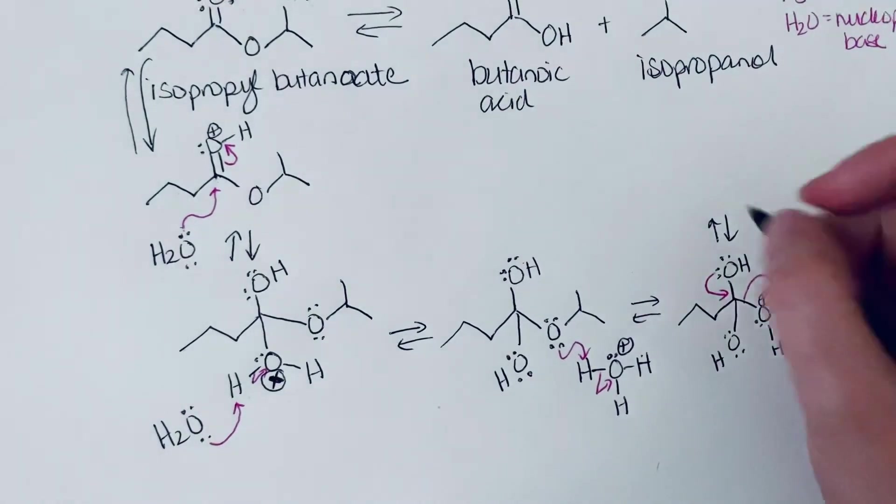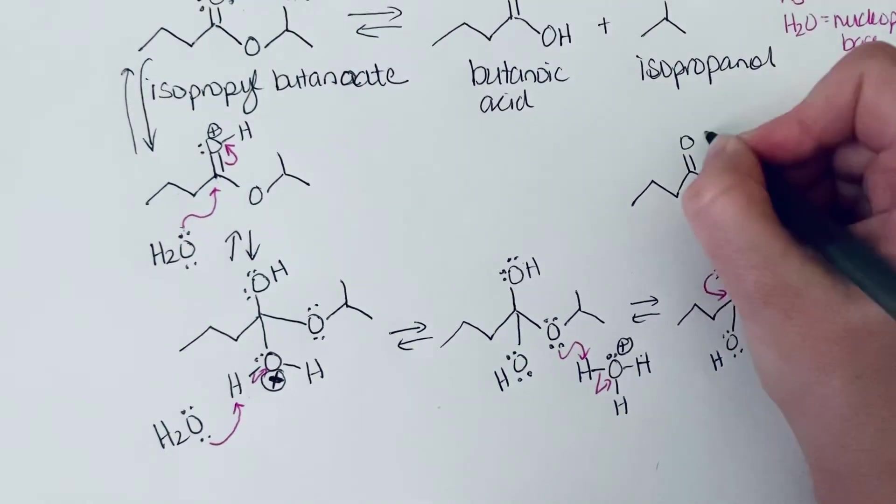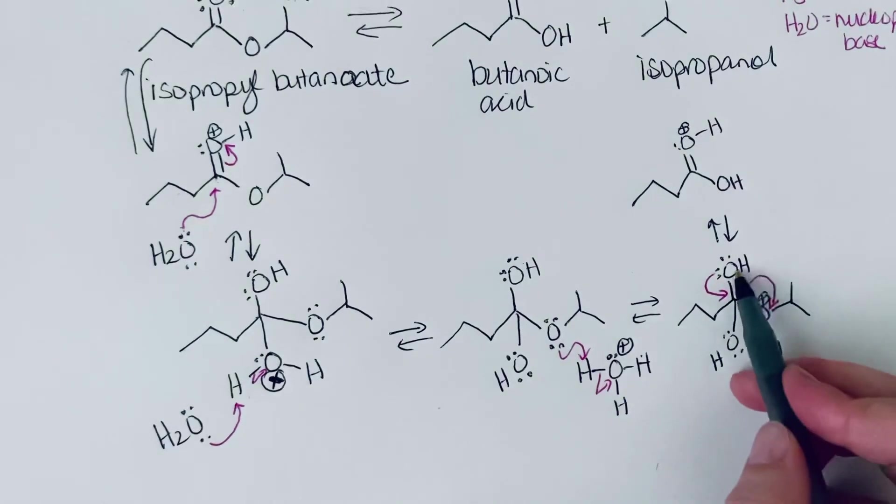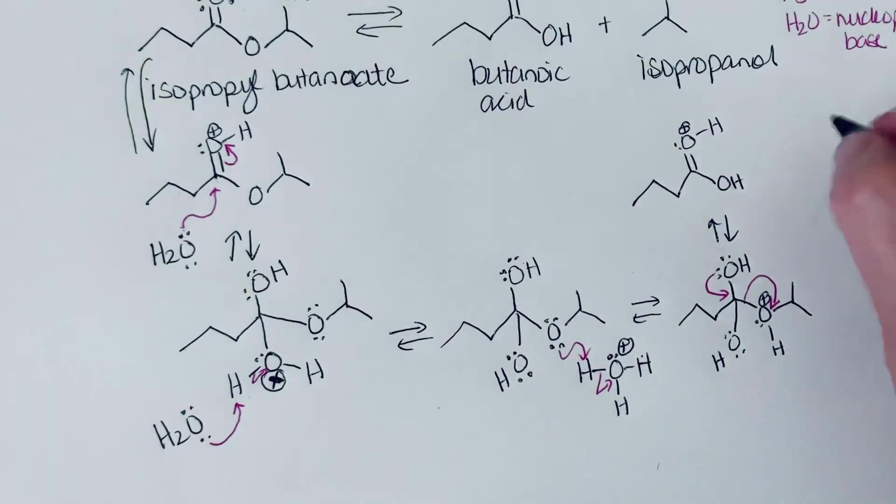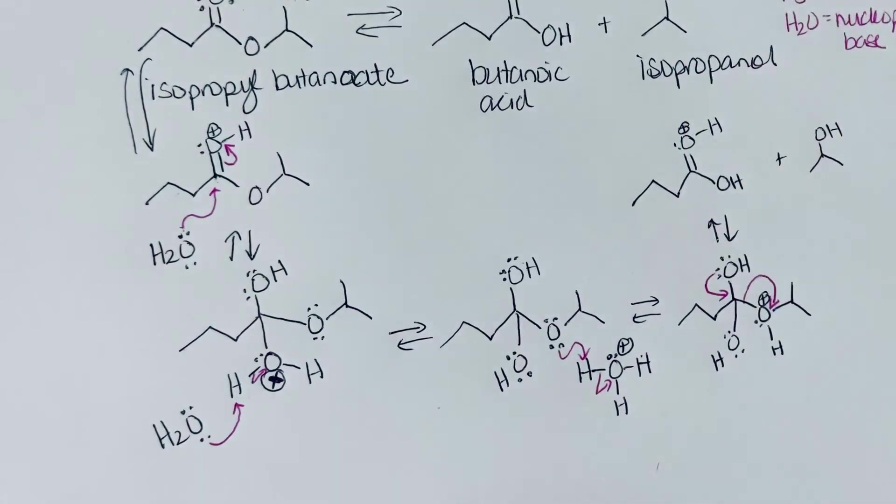And so what we're going to have is we will have the protonated carboxylic acid. Because we still have a hydrogen on there. And you formed the isopropanol. So you've got half of it. And so then in the final step, we're just going to take another molecule of water to act as a base.